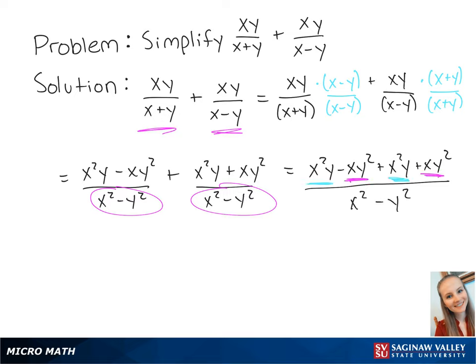If we combine the like terms, this will finally give us 2x squared y all over x squared minus y squared. This is the final answer.